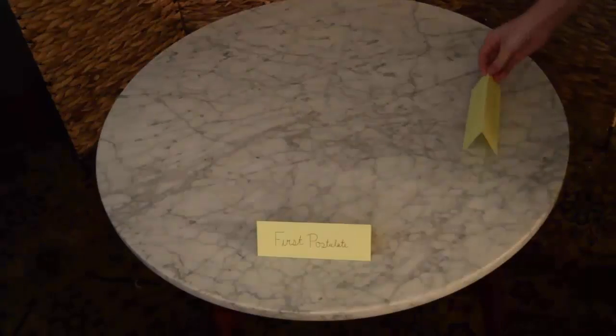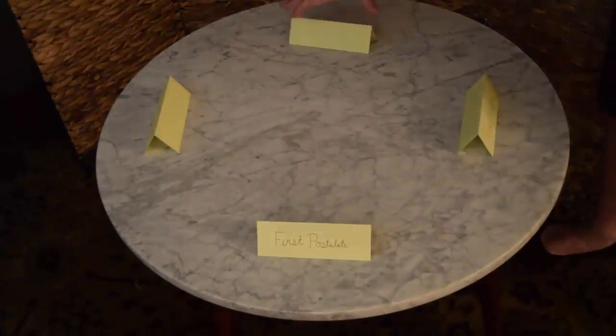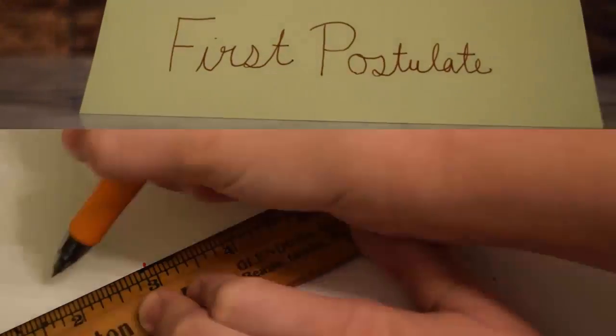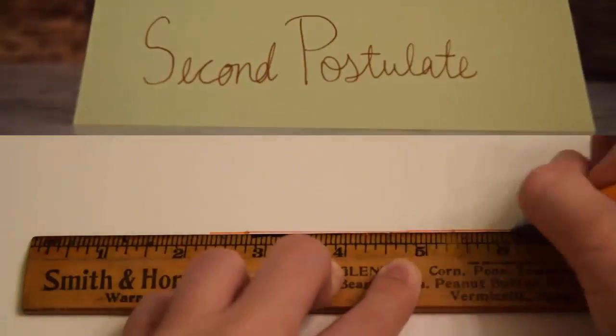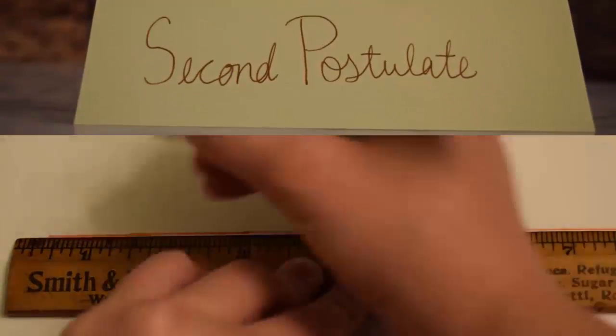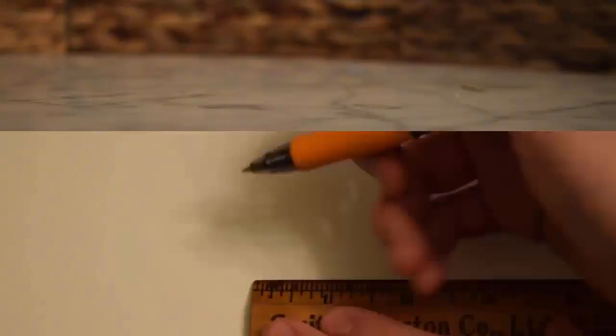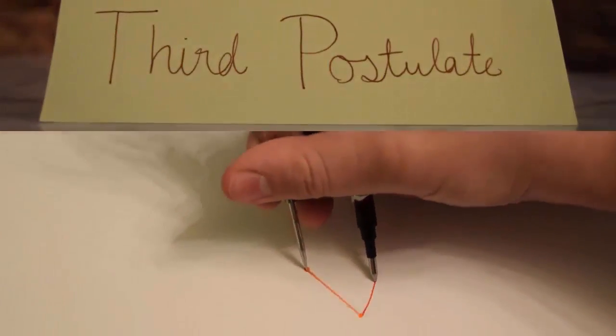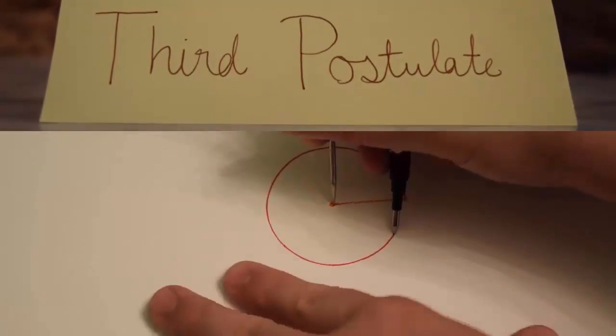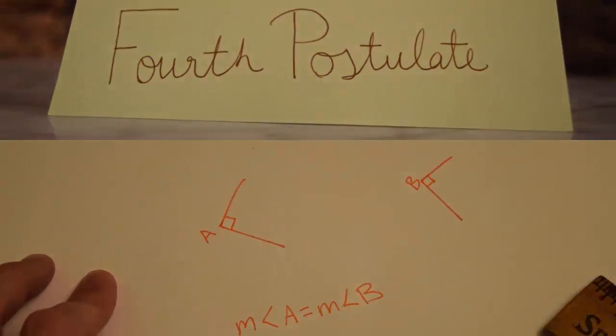The first four are to the point, obvious, and classy. First, you can draw a straight line between any two points. Second, any line segment can be extended indefinitely in a straight line. Third, given any straight line segment, a circle can be drawn with the segment as the radius and one of the endpoints as the center. Fourth, all right angles are congruent.